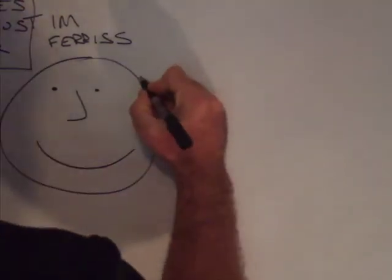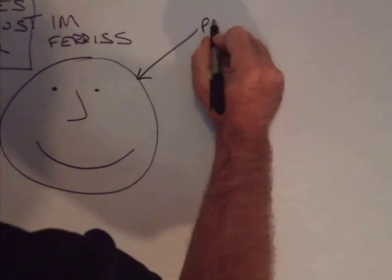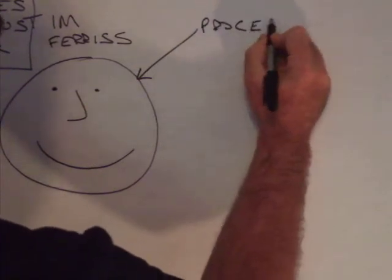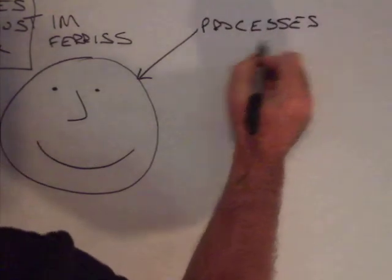The circle represents how Tim processes and perceives the world.